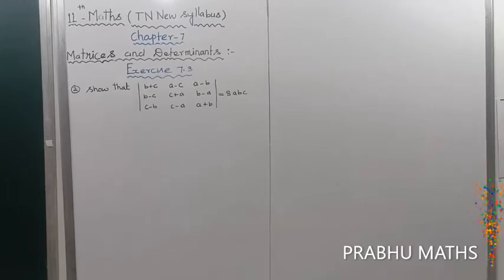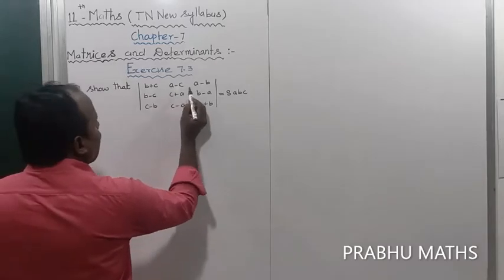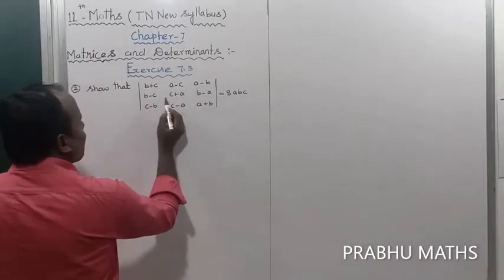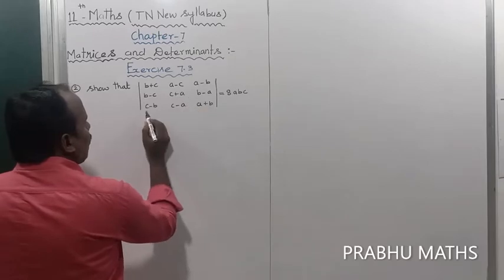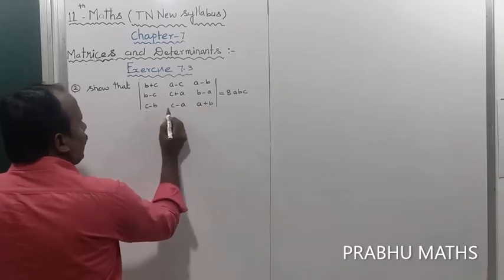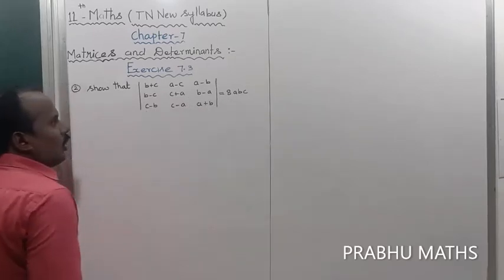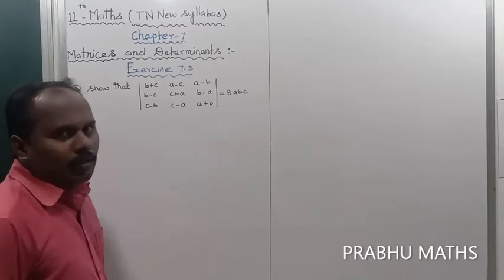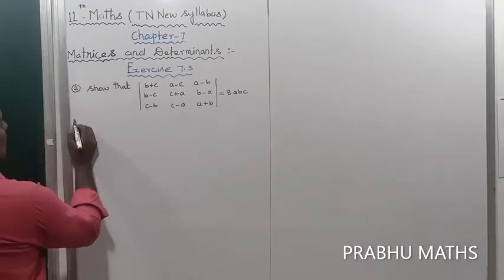We need to show that the determinant with entries b plus c, a minus c, a minus b, b minus c, c plus a, b minus a, c minus b, c minus a, a plus b is equal to 8abc.